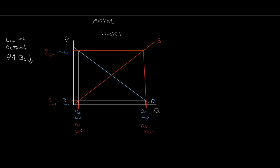This is the law of supply: price and quantity supplied are positively related — they move in the same direction. As price goes up I'm incentivized to produce more; if price falls I won't want to produce as much as before.